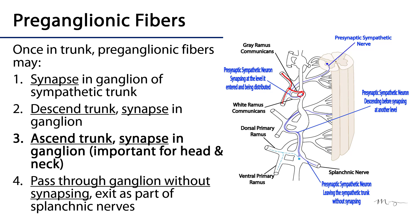Another option is that they can descend to another level, synapse there, and then leave. Or they can ascend the trunk, synapse, and leave. This is an important element for the head and neck, because white rami communicantes are from T1 through L2. Everything above — meaning the cervical spine — lacks a white ramus communicans. So all input to the head and neck via the cervical sympathetic trunk has to come from below, mostly from the thoracic spinal levels.